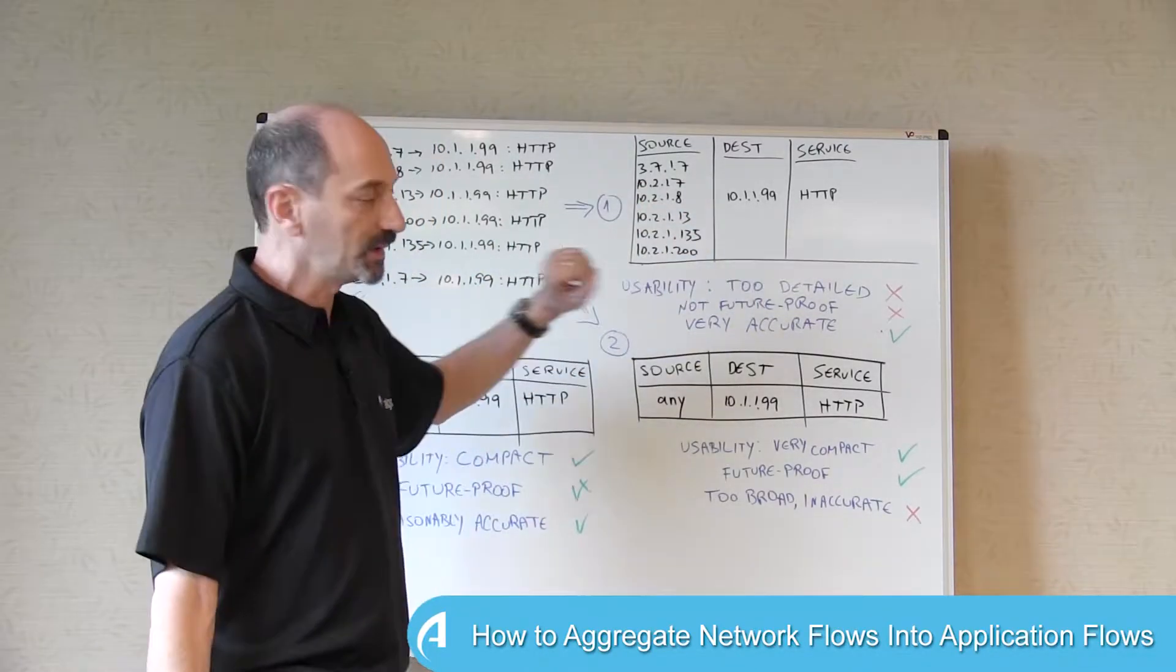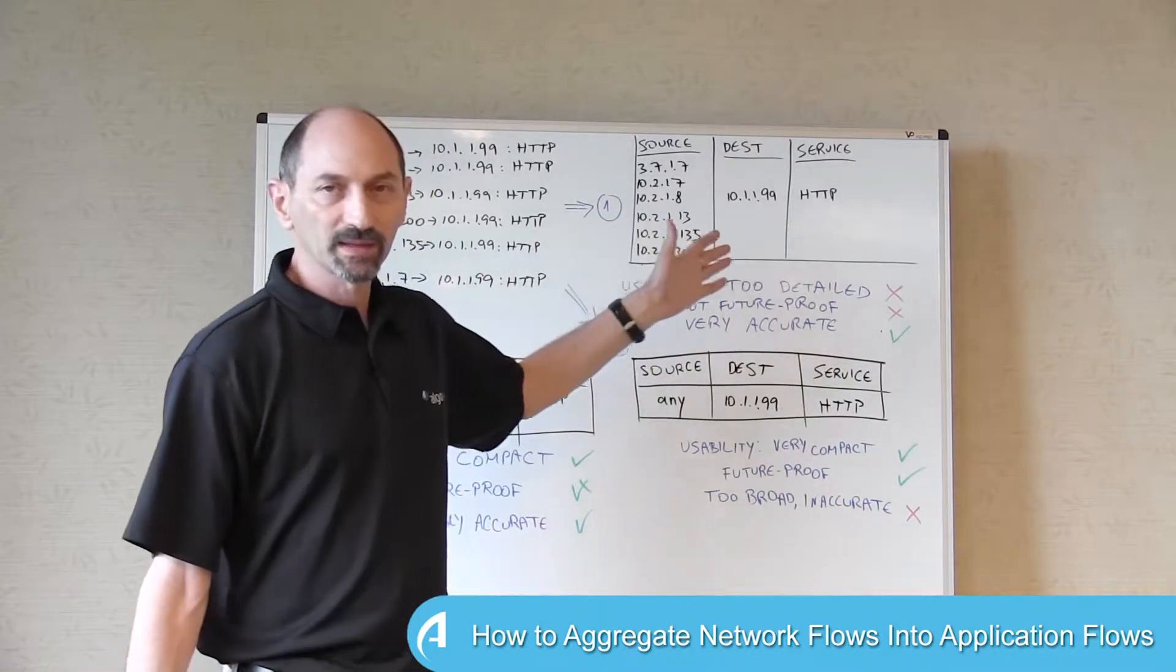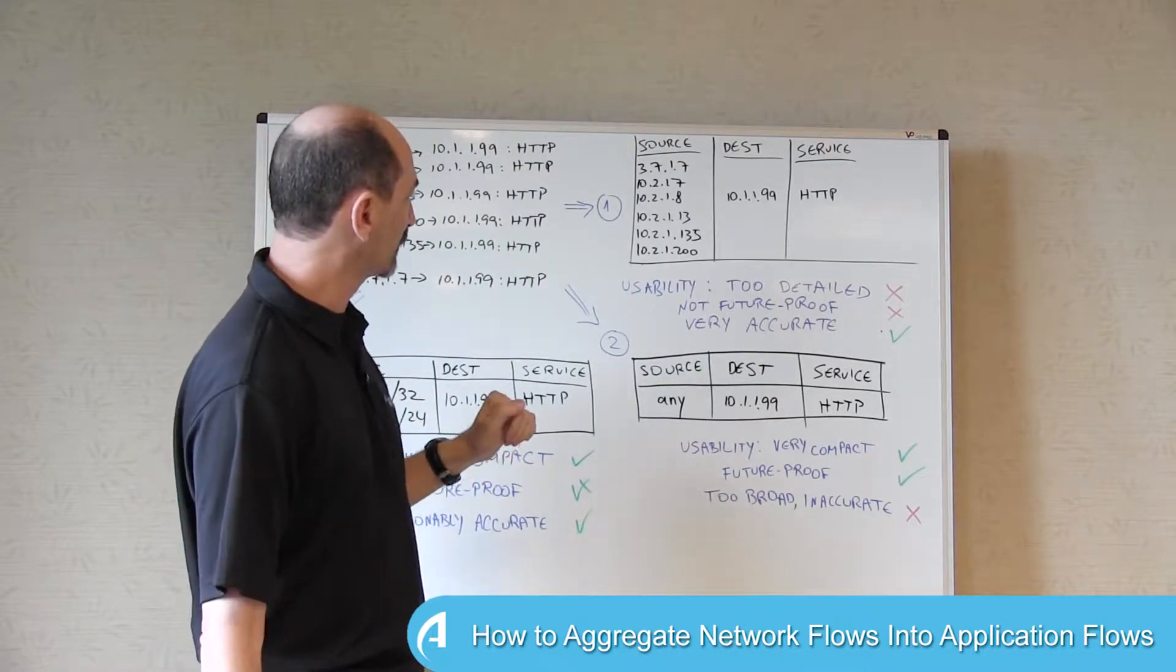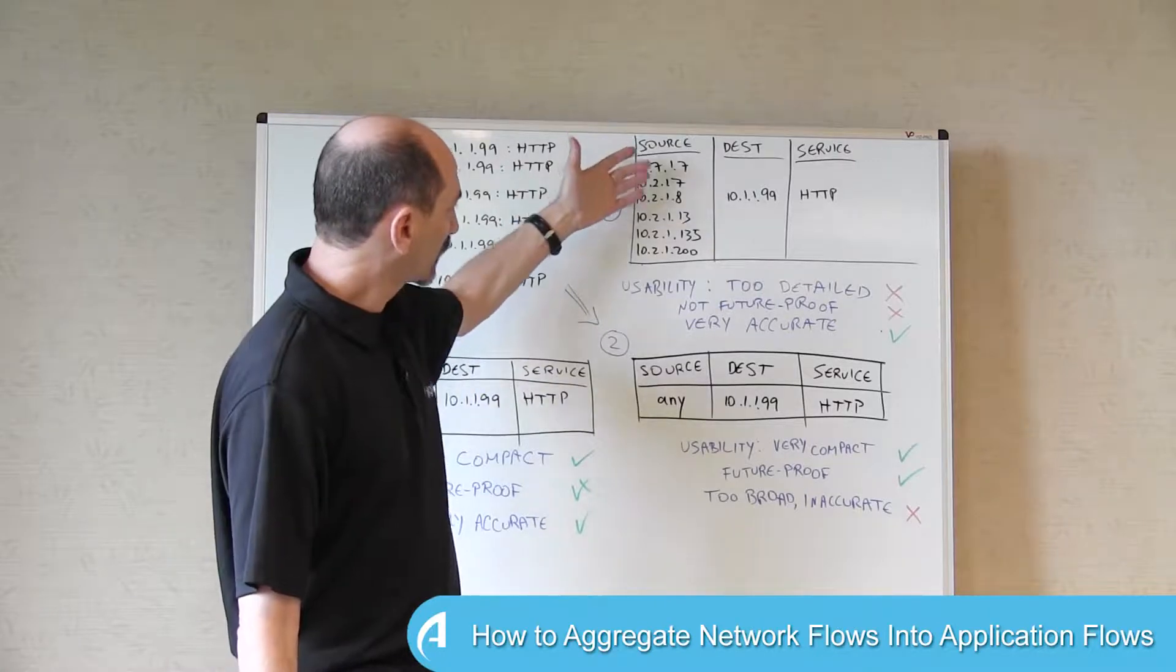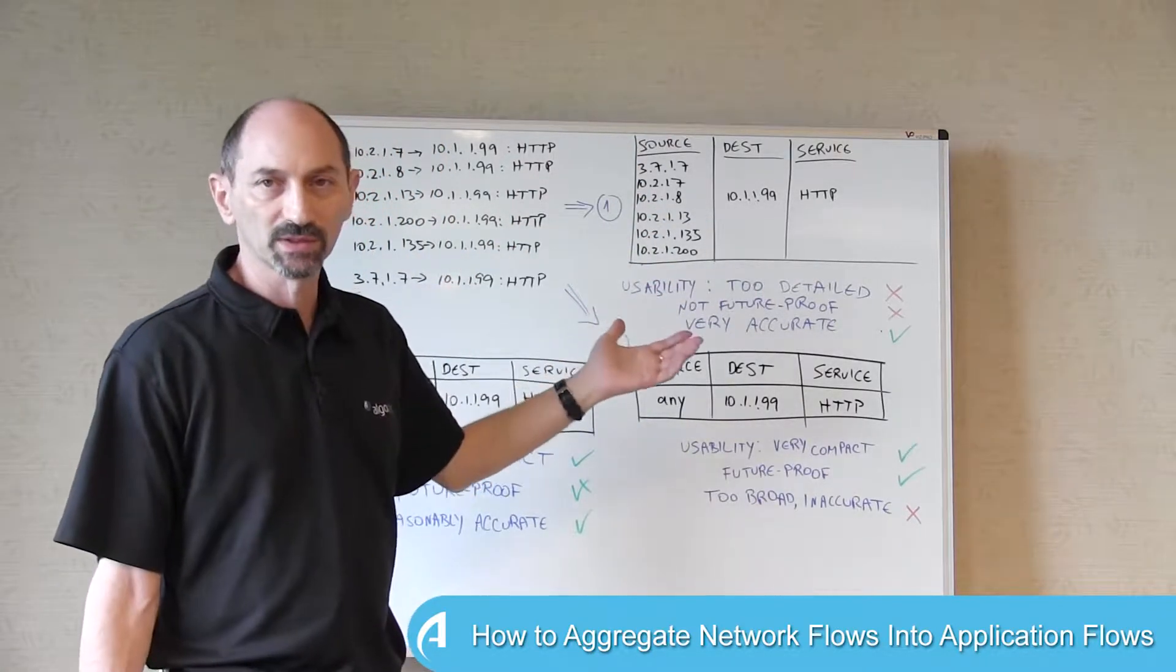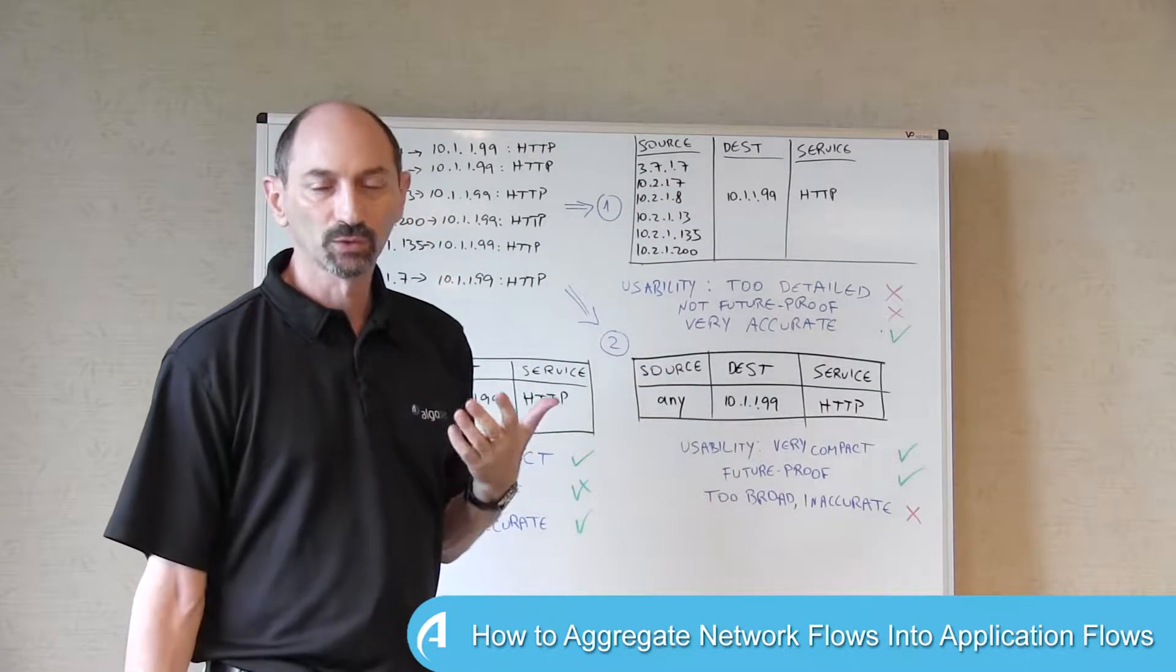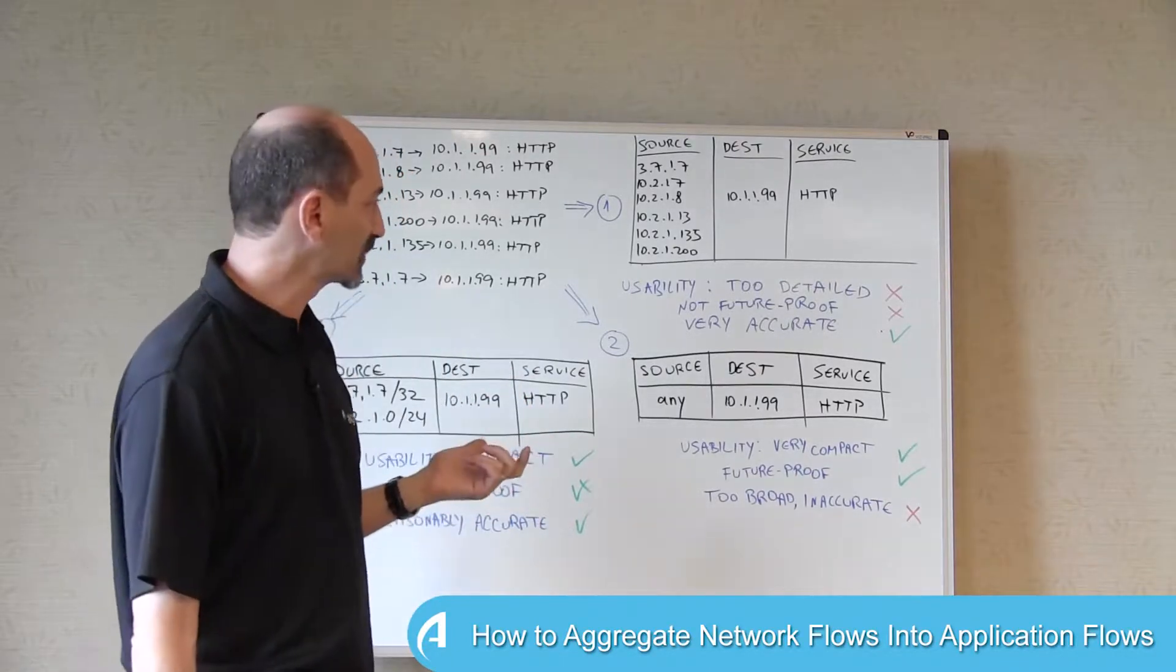This can be done quite easily. However, I argue that this is not very satisfactory for a few reasons. First of all, it's too detailed. There could be, here we have only six, but it could be hundreds or thousands of separate IP addresses appear in the source. And this is too long and too detailed for a person to look at and understand.